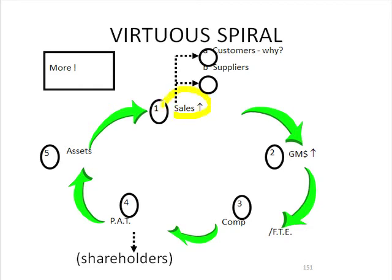If our sales go up, they go up because the customers are getting a better value proposition. So they're giving us a bigger share of their business on a transactional basis, or they decide they want to go down the partner path and give us a lot more share. But as our sales go up, our suppliers love it because we're buying more stuff.